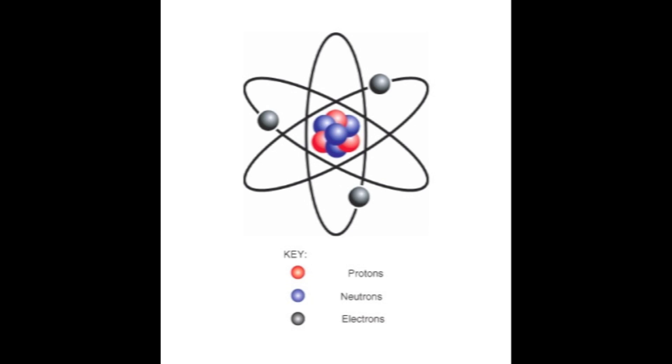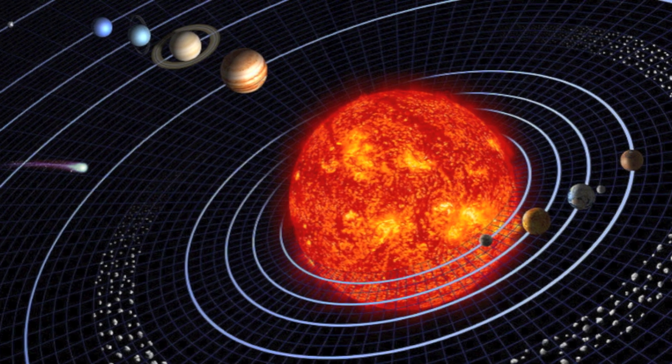Orbiting electrons are confined to orbit the nucleus at only certain energy levels in a similar way that planets only orbit the sun at certain distances.